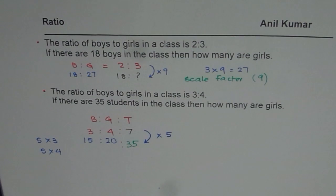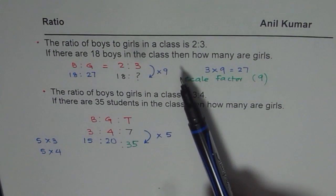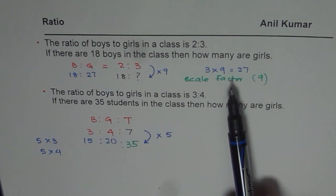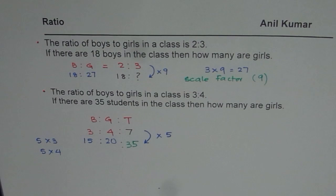You get the idea. So whenever you have ratio questions either of these two strategies are followed. If you are given the number of boys and girls, it could be apples and oranges at times, and if you are given one of them then find the scale factor directly.